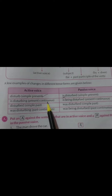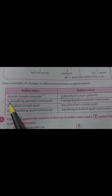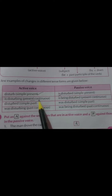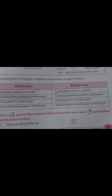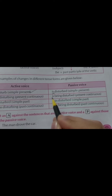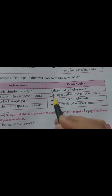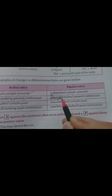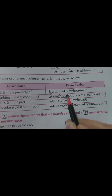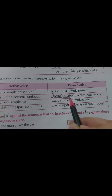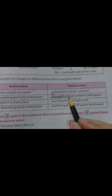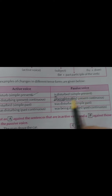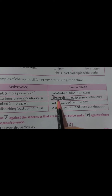We have discussed simple present and simple past tense. But what about present continuous and past continuous tense? For present continuous, the general rule is: is/am/are plus verb plus -ing. To change it into passive voice, you just have to add 'being' after 'is/am/are,' followed by the past participle form of the verb. The other rules remain the same — your doer becomes receptor and receptor becomes doer — and you use 'by' before the doer.